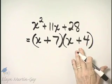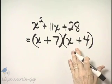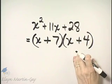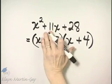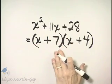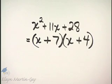So here is my factorization. Remember what factor means? It means write as a product. And I have written this trinomial as the product of x plus 7 and x plus 4.